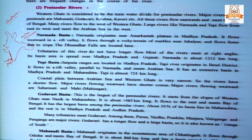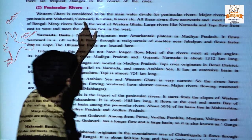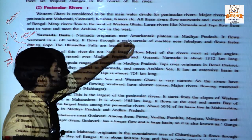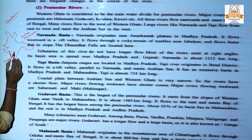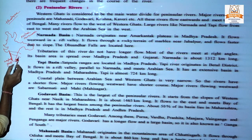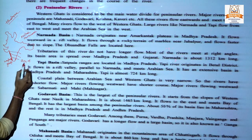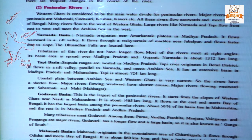The major rivers of the Peninsular region are Mahanadi, Godavari, Krishna, Kaveri, etc. All these rivers flow eastward and meet the Bay of Bengal.